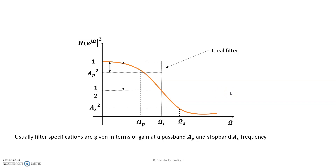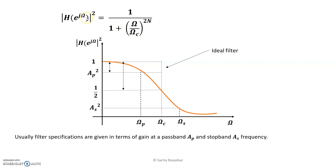The magnitude square response of the Butterworth filter is 1 upon 1 plus (Ω/Ωc) raised to 2n, where n is the order of the filter and Ωc is the minus 3 dB cutoff frequency. To get the Butterworth approximation function, we need two parameters: n, the order of the filter, and Ωc, the minus 3 dB cutoff frequency. In this video, we are deriving the formula to find the order of the filter.